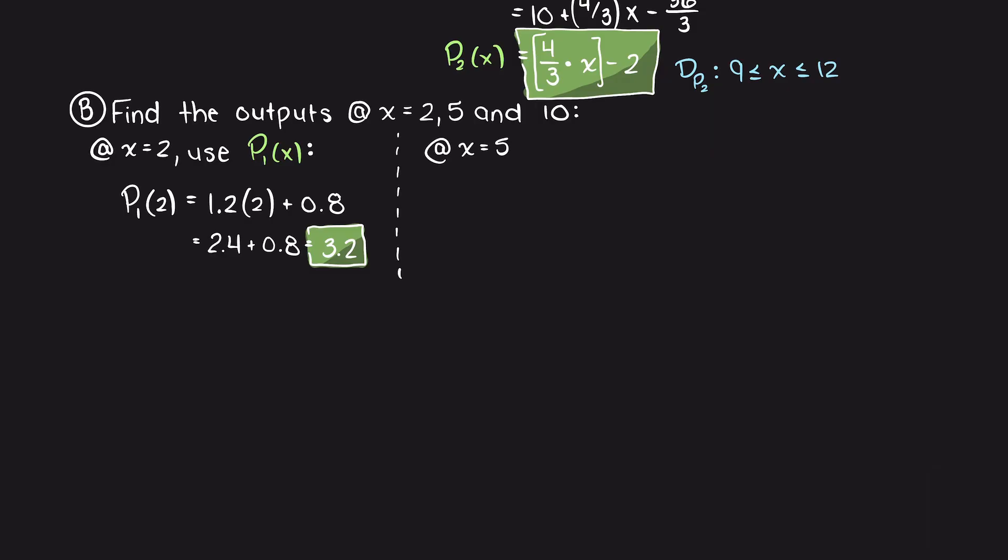Secondly, we have x equals 5, which again falls in the domain of p1. Therefore, for an input of 5, we get an output of 6.8.